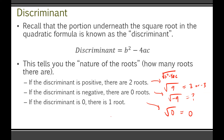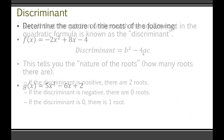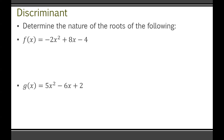Anytime you see 'state the nature of the roots,' that's just a fancy way of saying use the discriminant and tell me how many roots there are. So: determine the nature of the roots of the following. I'm going to give you a moment to pause the video, try both of these questions, and then I'll go over it. To find the nature of the roots, we need to find the discriminant b² minus 4ac.